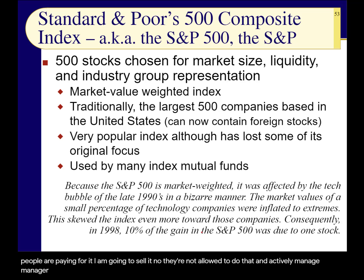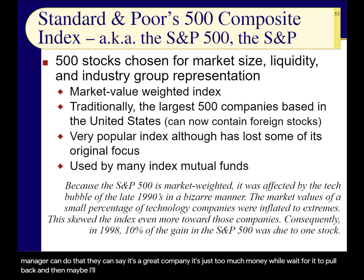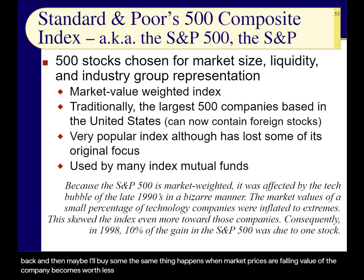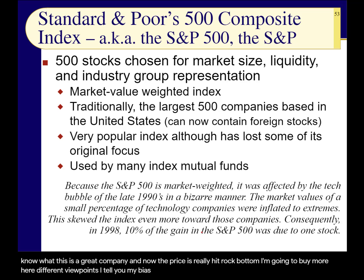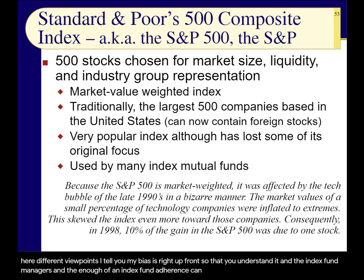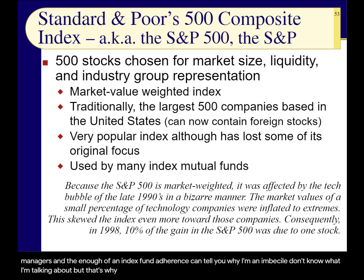An actively managed manager can say 'it's a great company, it's just too much money — I'll wait for it to pull back and then maybe I'll buy some.' The same thing happens when market prices are falling. As the value of a company falls, the index fund manager must sell, whereas an active manager can say 'this is a great company and now the price has really hit rock bottom — I'm going to buy more.' You're going to hear different viewpoints on this — that's why there's chocolate and vanilla.